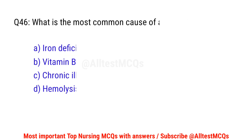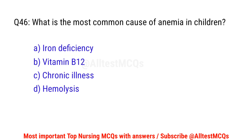Question number 46. What is the most common cause of anemia in children? The correct option is A: Iron deficiency.